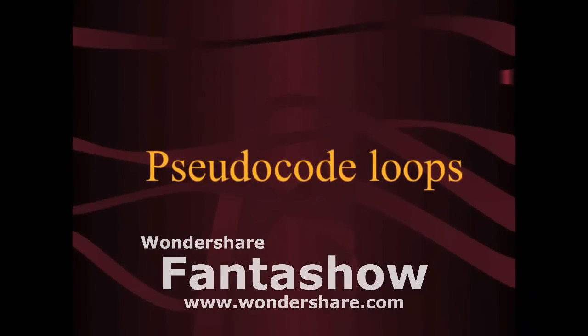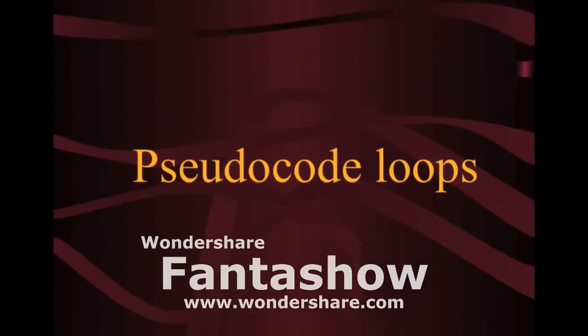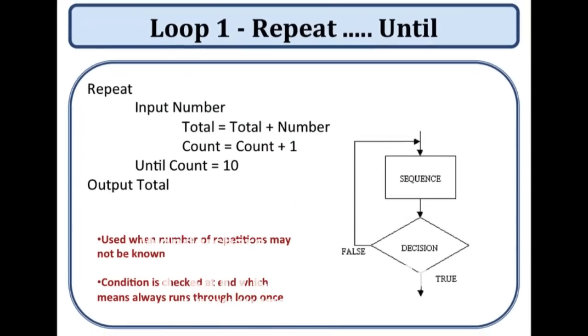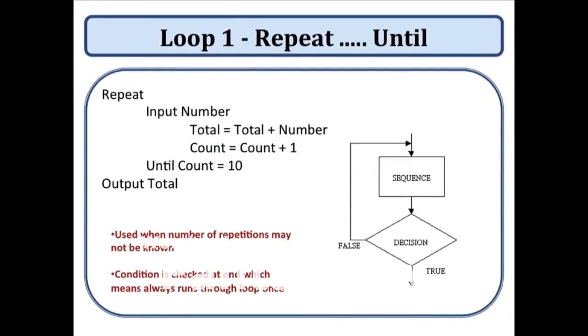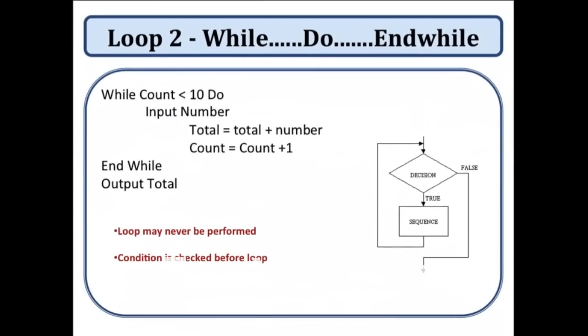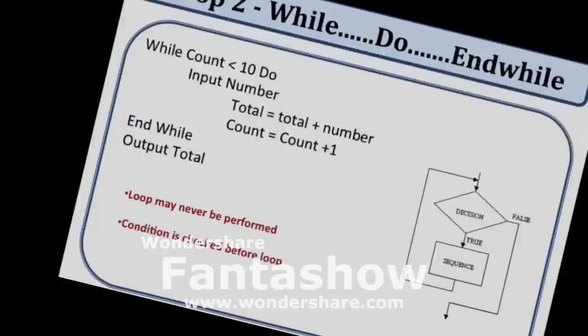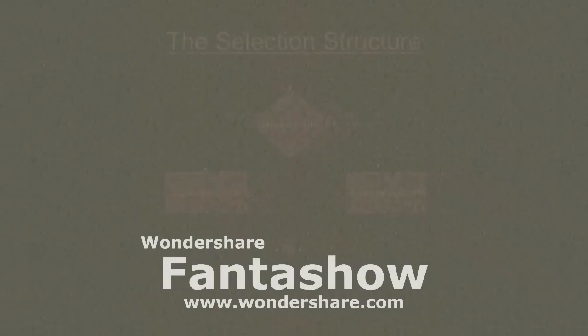There are three loops in pseudocode. Loop one is repeat, until. Loop two is while, do, and while.